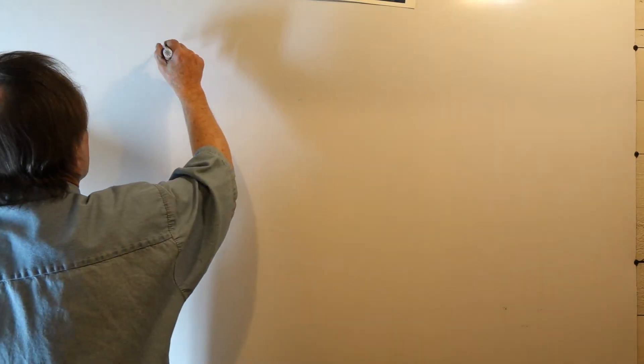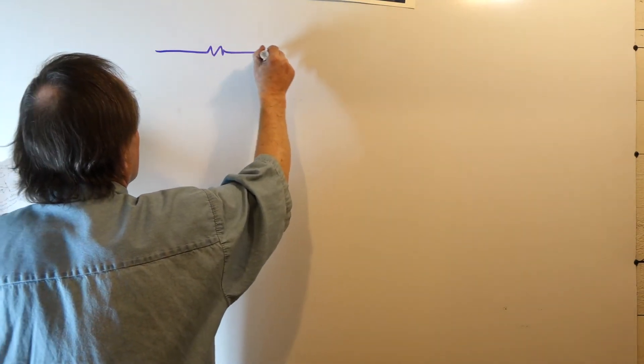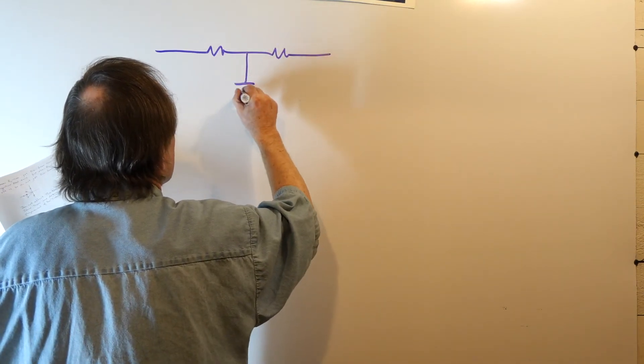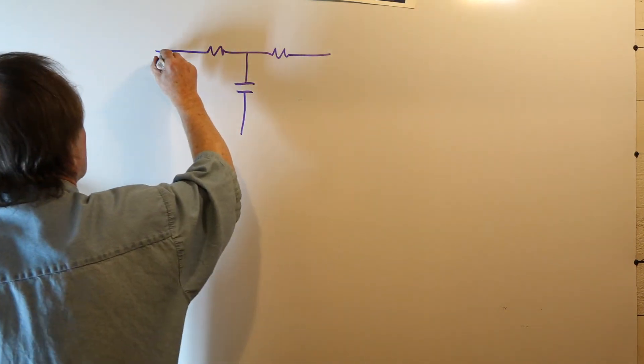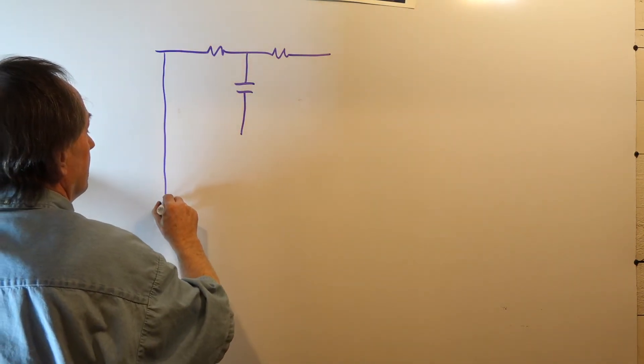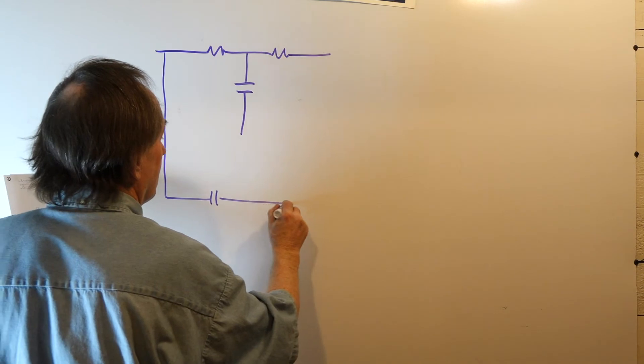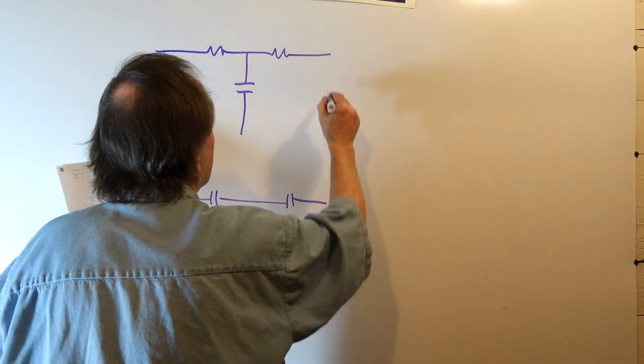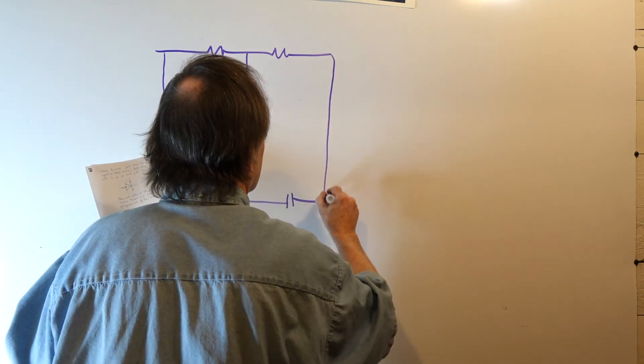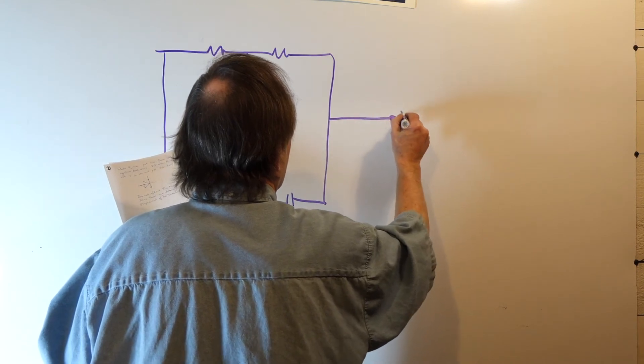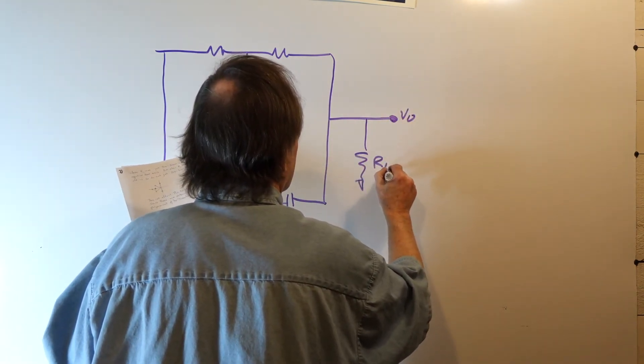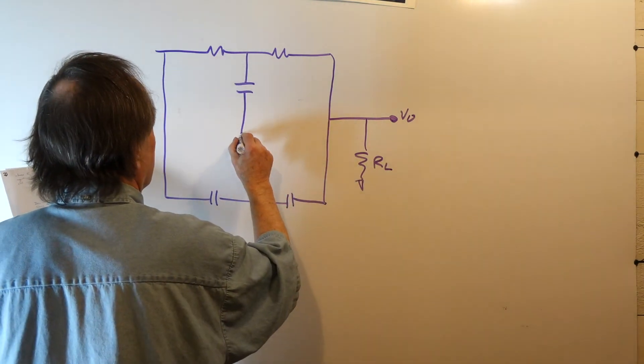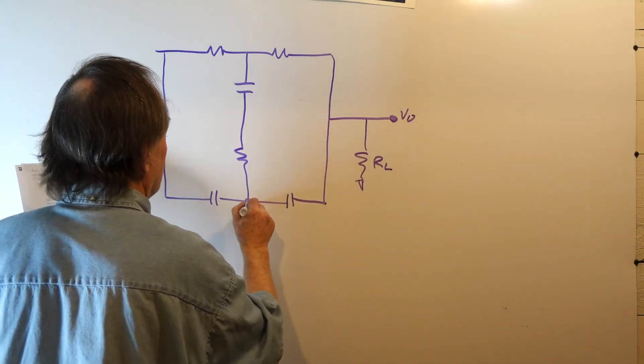If you put an amplifier in to bootstrap the network, you get a very interesting result. I'll show you that schematic very quickly. I'm going to take the original twin T. Okay, I've just flipped it upside down. It doesn't really matter.